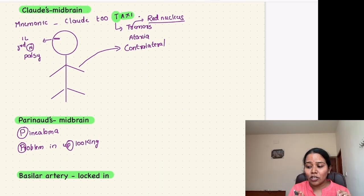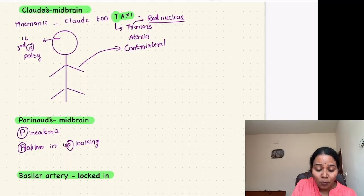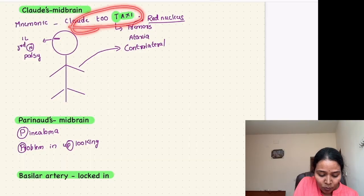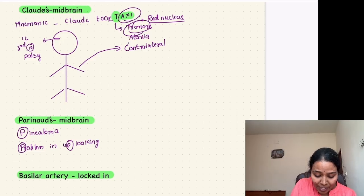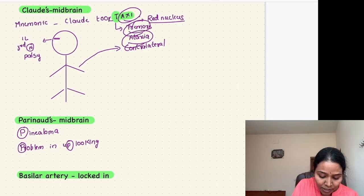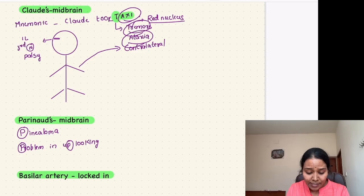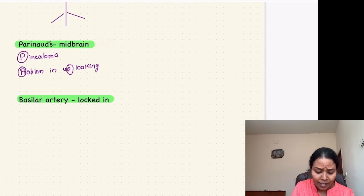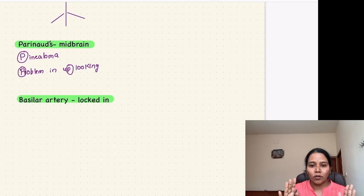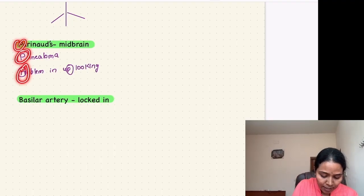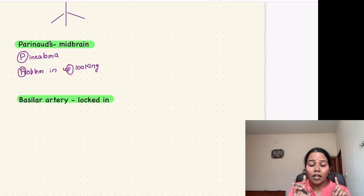The second midbrain syndrome is Claude's syndrome — mnemonic 'clod took taxi': T for tremors, axi for ataxia, both contralateral due to red nucleus involvement. The third is Parinaud's syndrome, remembered by four P's: seen in pinealoma, with a problem in up-looking — watch for these four P's in MCQs.